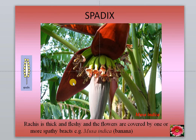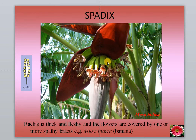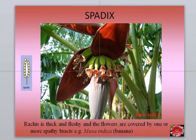This is called a spadix. The rachis is fleshy and thick, and the flowers are covered by one or more spathe bracts. For example, banana and anthurium are examples of spadix inflorescence.